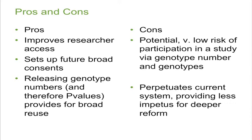Pros: improves researcher access, sets up future broad consistent consents. Releasing genotype numbers and therefore p-values is a broad level of reuse that we don't do now and would be great to do. There's a very low risk — if one takes Homer et al. as truth, and there are people who dispute this — that this is really feasible in the real world, because you've changed the risk for the participants. It's quite complicated because you have to genotype someone, and by doing so you've already got quite extensive access to that individual. It's worth remembering this is our current status quo, and it perpetuates the current system. My opinion is that we can do better than just streamlining.